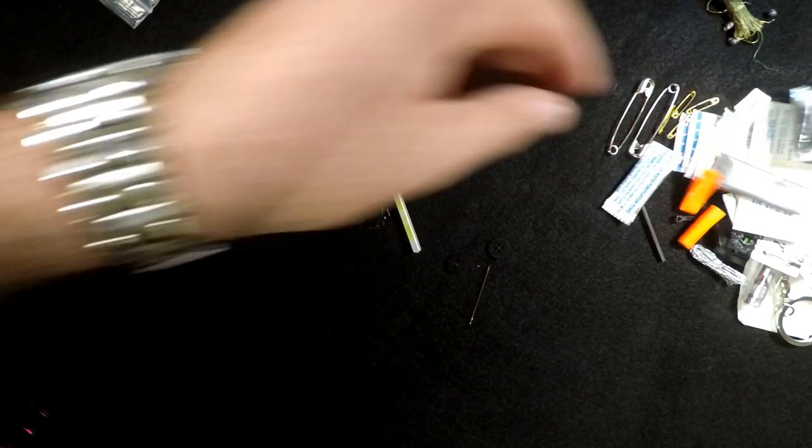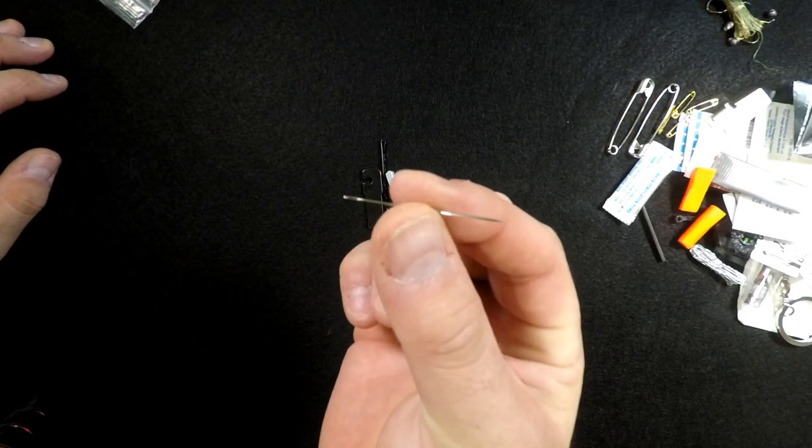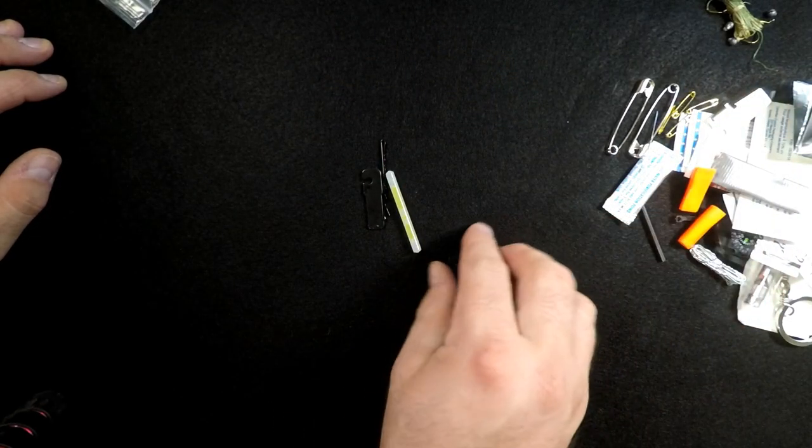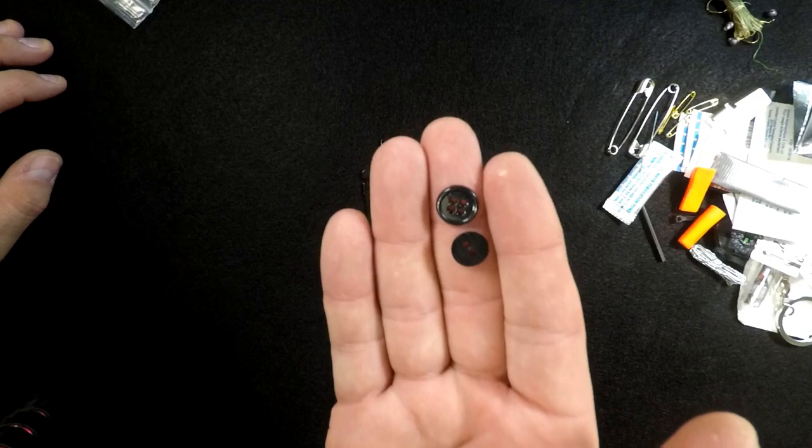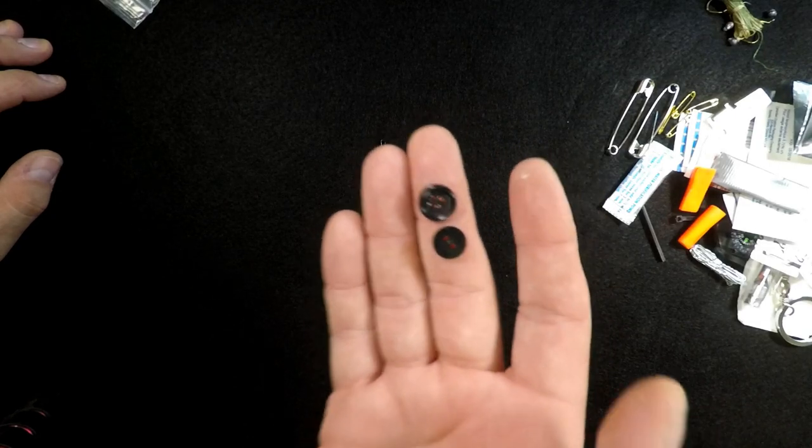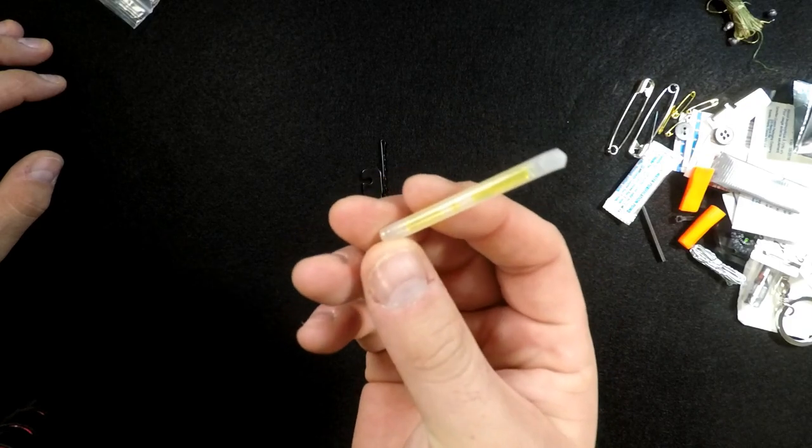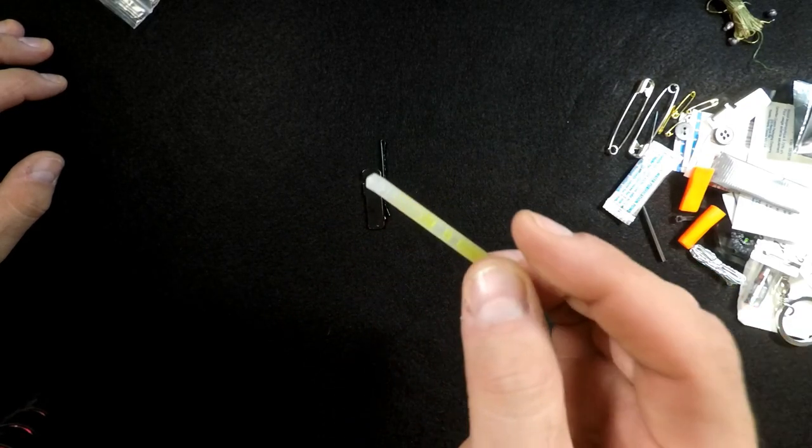There's your sewing needle for sewing yourself up, sewing your clothes up, whatever you need to use it for. A couple buttons need to repair your clothes, maybe you've broken one. Glow stick. So you can tie things, find stuff at night, whatever you need to use it for. One time use, so make it worth it. If you have long hair, there you go. Or if you need to pick a lock and you're good enough, there you go.